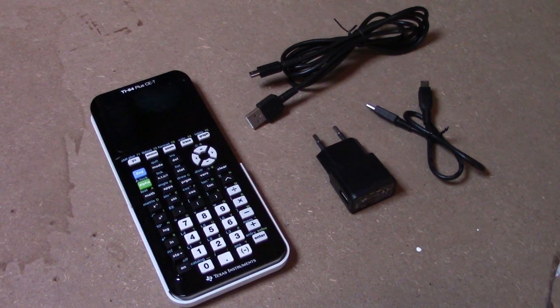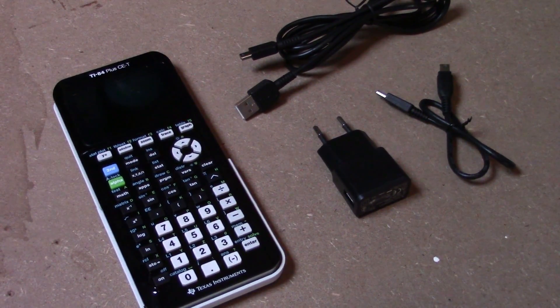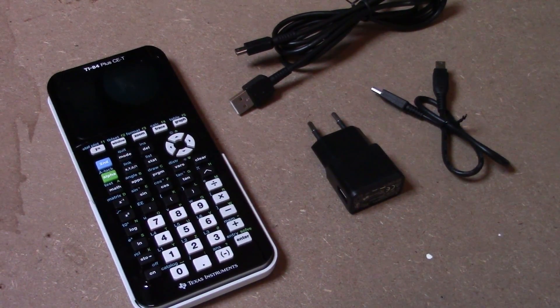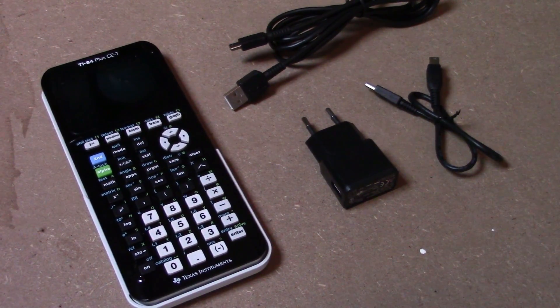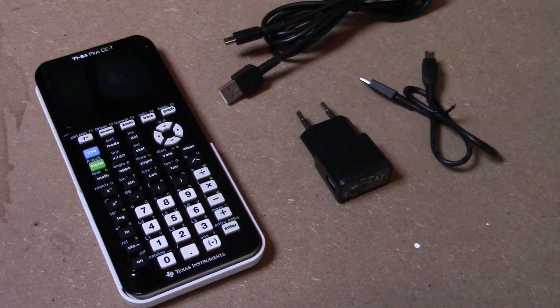So what do you actually get when you buy this calculator? Well, the calculator comes with two USB cables, one of them is USB-A to Mini-B, the other one is Mini-B to Mini-A. You also get a power adapter, and you get some instruction manuals as well.